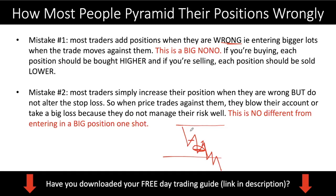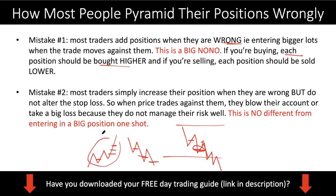If you are buying and trying to pyramid your position, each position should be bought higher. Let's say you buy the first position here — your second position has to be higher, your third position has to be higher, your fourth position has to be higher. Never buy on the way down. The same is also true for the opposite: if you are selling in a downtrend, your first sale is here, your second sale has to be lower, your third sale has to be lower. Always make sure you are selling down.